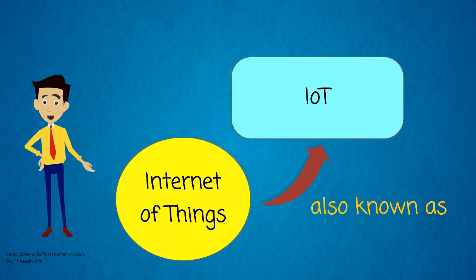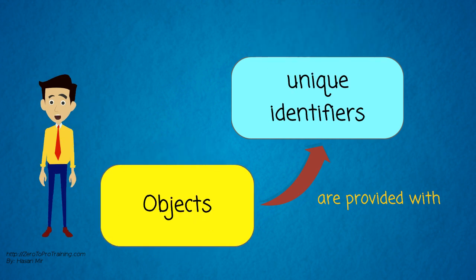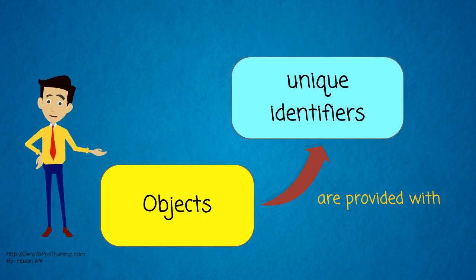The Internet of Things, also known as IoT, is an environment in which objects have an ability to transfer data to each other over a network. They are provided with unique identifiers.